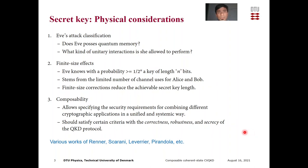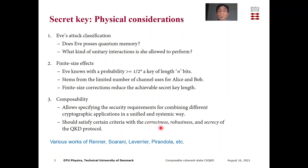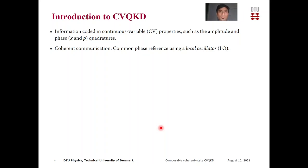Composability is a framework that allows specifying the security requirements for combining different cryptographic applications in a unified and systematic way. In the context of practical QKD, composability is of utmost importance because the secret keys obtained from a QKD protocol are almost always used in other applications. A QKD protocol should be secure, meaning the output keys should be identical and secret — these are related to the secrecy and correctness properties. It should also be robust, outputting non-trivial keys if there is no active attack on the quantum channel. These are some of the theoretical considerations that affect a secret key, and from a practical point of view, the design and operation of the QKD system has a direct or indirect effect on the secret key length as well.